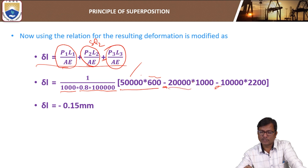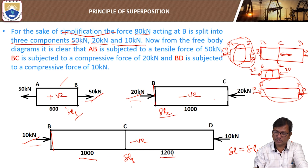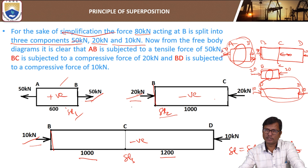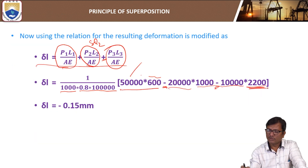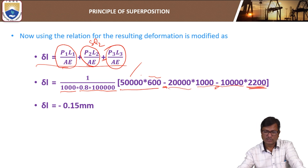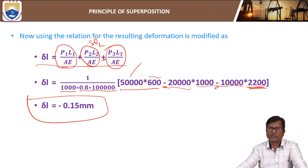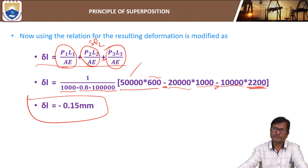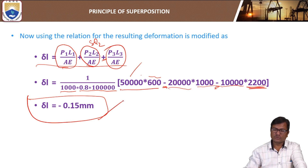The second portion BC has a 20 kN load and length 1000 mm. The 10 kN acts on BD, whose length is BC + CD = 2200 mm. The resultant deformation is negative, meaning the bar decreases in length overall. That is how we make use of the principle of superposition for solving problems.